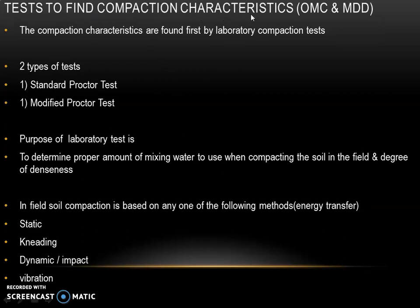Tests to find compaction characteristics: compaction characteristics are OMC and MDD — OMC is optimum moisture content and MDD is maximum dry density. These are found by laboratory compaction tests, of which there are two types: standard proctor test and modified proctor test. The purpose of the laboratory test is to find the proper amount of water to be mixed when compacting the soil in the field and to find its degree of denseness. In the field, soil compaction is based on static, kneading, dynamic or impact, and vibration methods.